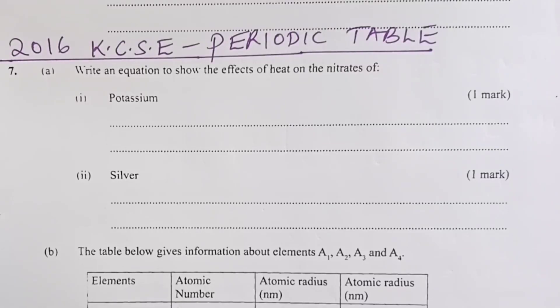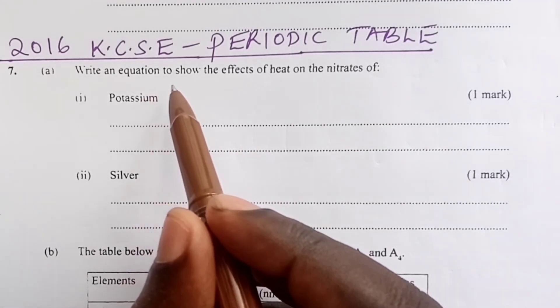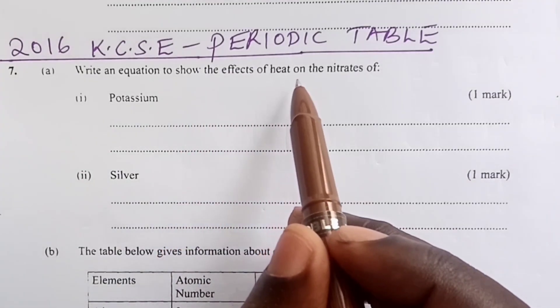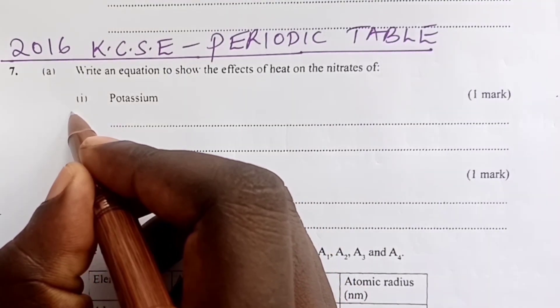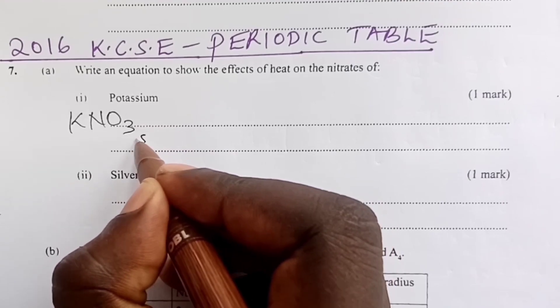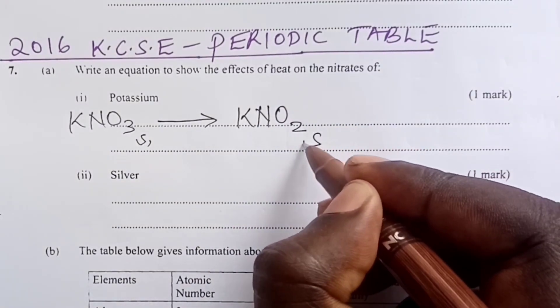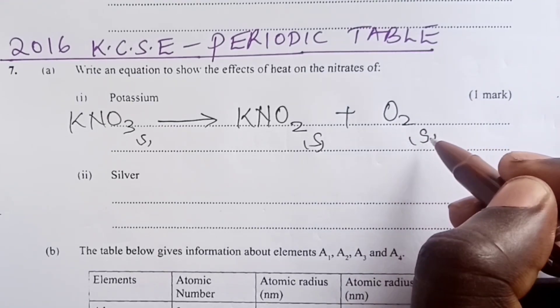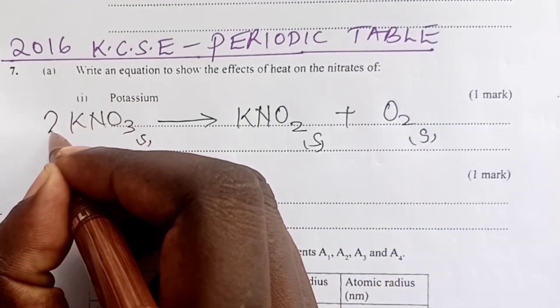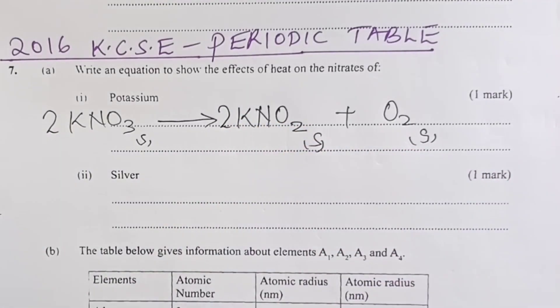KCSE 2016 chemistry paper 2 question number 7 testing on the periodic table, but first effects of heat on nitrates. Part a: write an equation to show the effects of heat on the nitrates of potassium. Potassium is a very reactive metal and therefore its nitrate would decompose to give the nitrite and oxygen gas. We would balance with a 2 on potassium nitrate and a 2 on potassium nitrite to score the first mark.